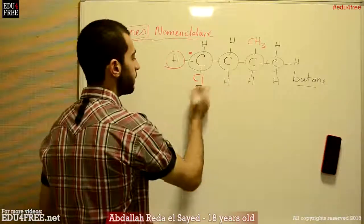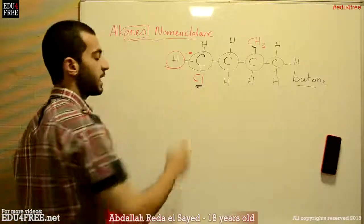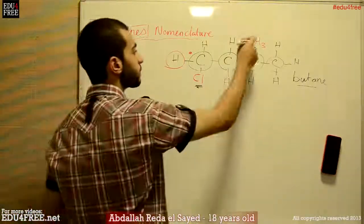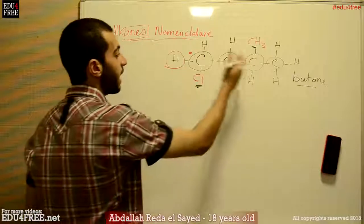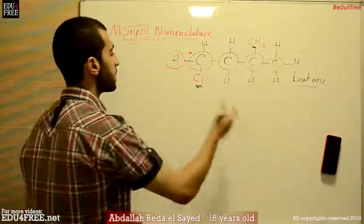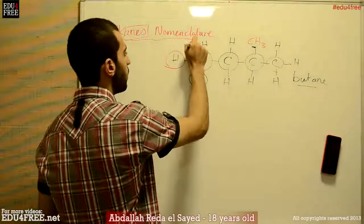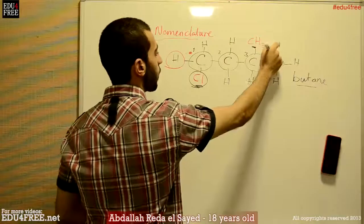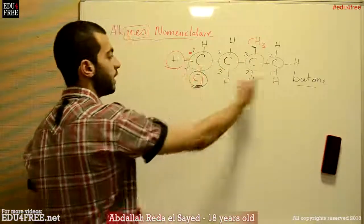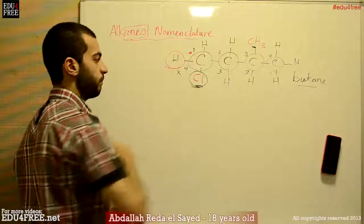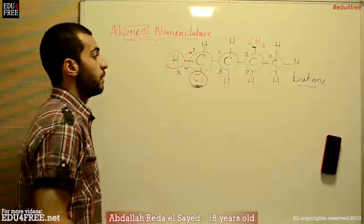We have the chlorine and we have the methyl group. There is a rule that says that any halogen substituent has priority in the nomenclature over the alkyl substituent. What this means is that when I count, I count from the side that gives the halogen substituent the least number. For example, if I say 1, 2, 3, 4 or 1, 2, 3, 4 — the numbering that gives chlorine the number 4 is wrong; it should take number 1. That is the rule.